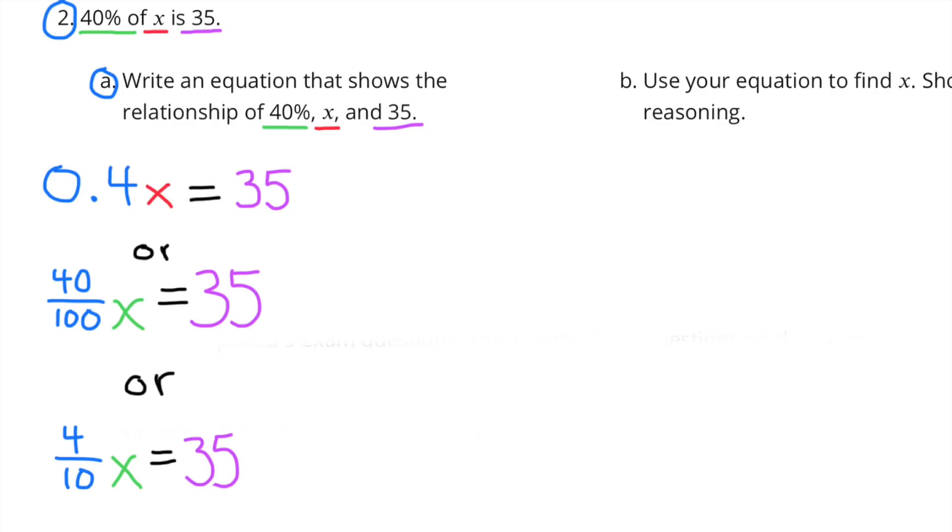Number 2: 40% of X is 35. Part A: Write an equation that shows the relationship of 40%, X, and 35. I've written 3 equations for you to choose from: 4 tenths X equals 35, or 40 hundredths X equals 35, or the fraction version of 4 tenths X equals 35.